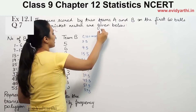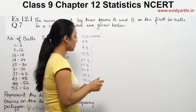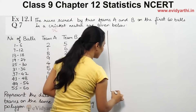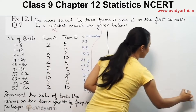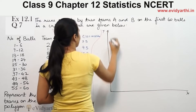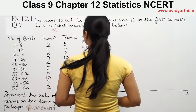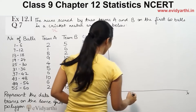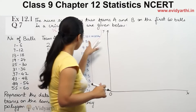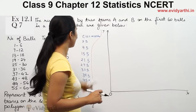Now we will use the class marks and set up the graph. We have the y-axis and the x-axis starting from 0. First we will mark the class marks on the x-axis — that means number of balls. So it starts from 3.5.